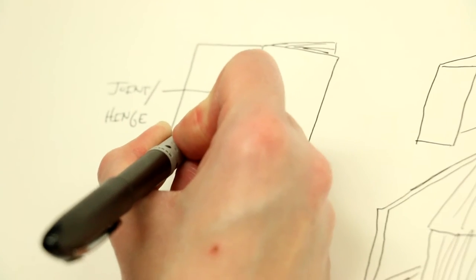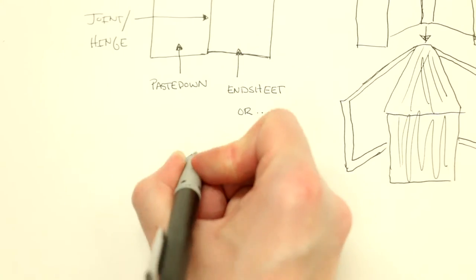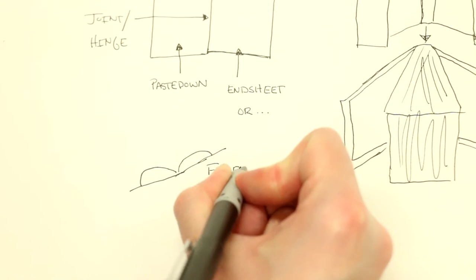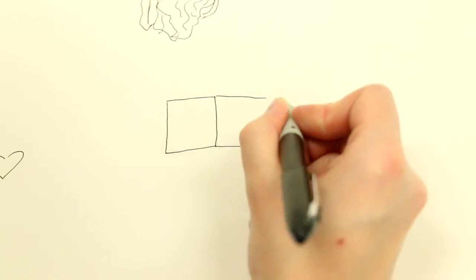When you open the front cover of a book, what you see on the inside of the cover is the paste down and the end sheet. They can also be called fly leaves. These sheets occur before and after the text of a book.